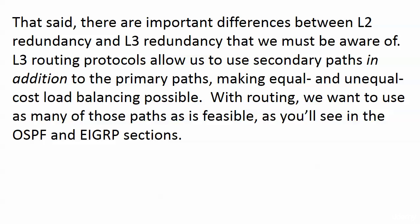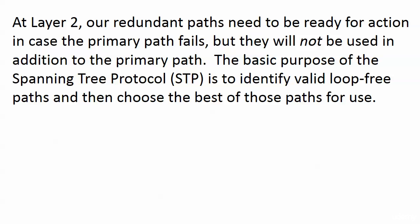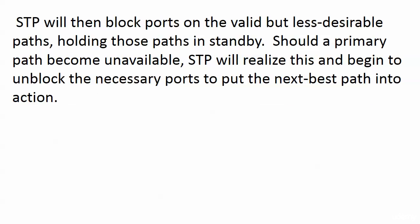With routing, we want to use as many of those paths as is feasible. At layer 2, our redundant paths need to be ready for action in case the primary path fails or a port goes bad, but they are not by default going to be used in addition to the primary path. STP is going to discover a loop-free path — the best loop-free path — and choose that path for use. The other paths are on standby, with STP blocking ports on the valid but less desirable paths.